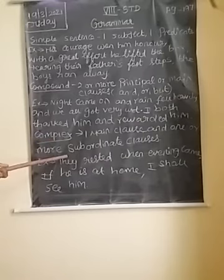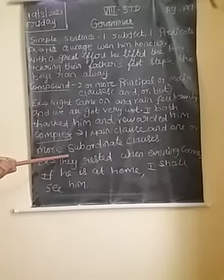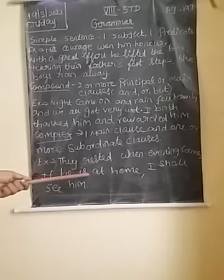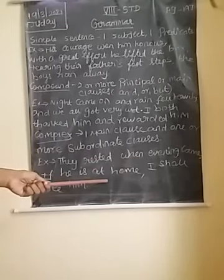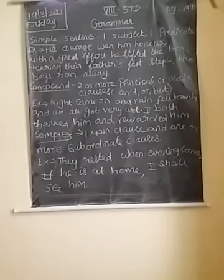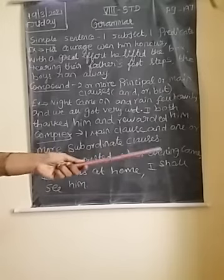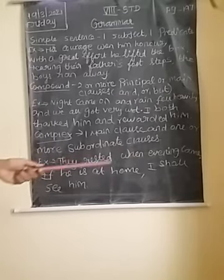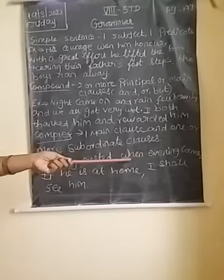Complex sentence consists of one main clause and one or more subordinate clauses. Subordinate clauses are dependent. For example: They rested when evening came. If you separate 'when evening came,' it doesn't give complete meaning on its own — something more has to come. So 'when evening came' is a dependent clause.